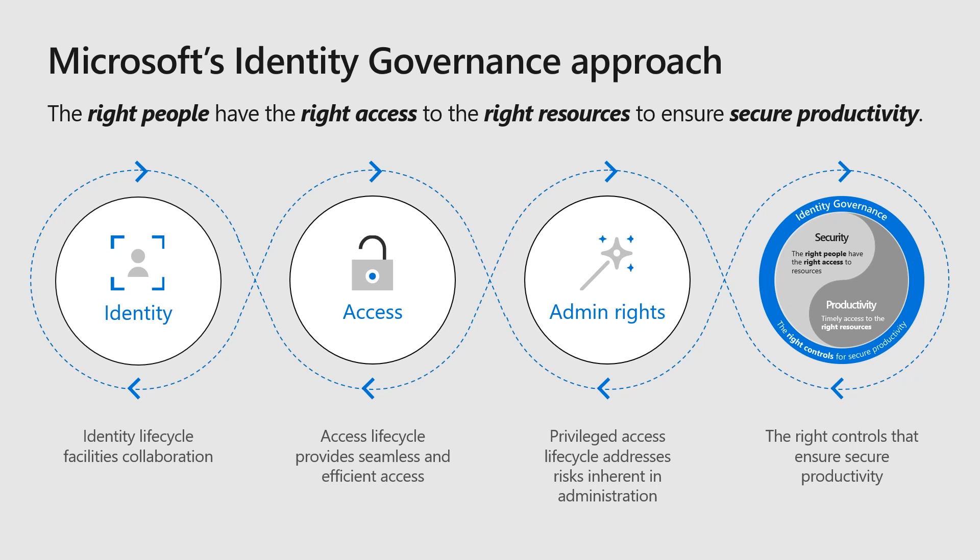Third, the privileged access management — the additional controls required to ensure that users with admin credentials and privileges are working in a least privileged mode to reduce access and security risks. The Privileged Identity Management feature, PIM, provides privilege role monitoring, revalidation of admin user identities when they get those admin privileges, and time-limited just-in-time privilege access. Additionally, approval workflows ensure there's appropriate oversight, and PIM works across Azure AD-connected services like Microsoft 365 administrator roles, as well as Azure resource roles.